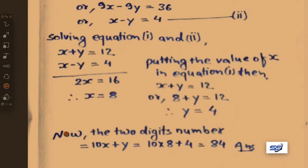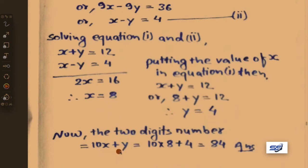Our required two-digit number is 10x plus y. Putting the values: 10 into 8 plus 4 equals 80 plus 4 equals 84. So 84 is our required two-digit number.